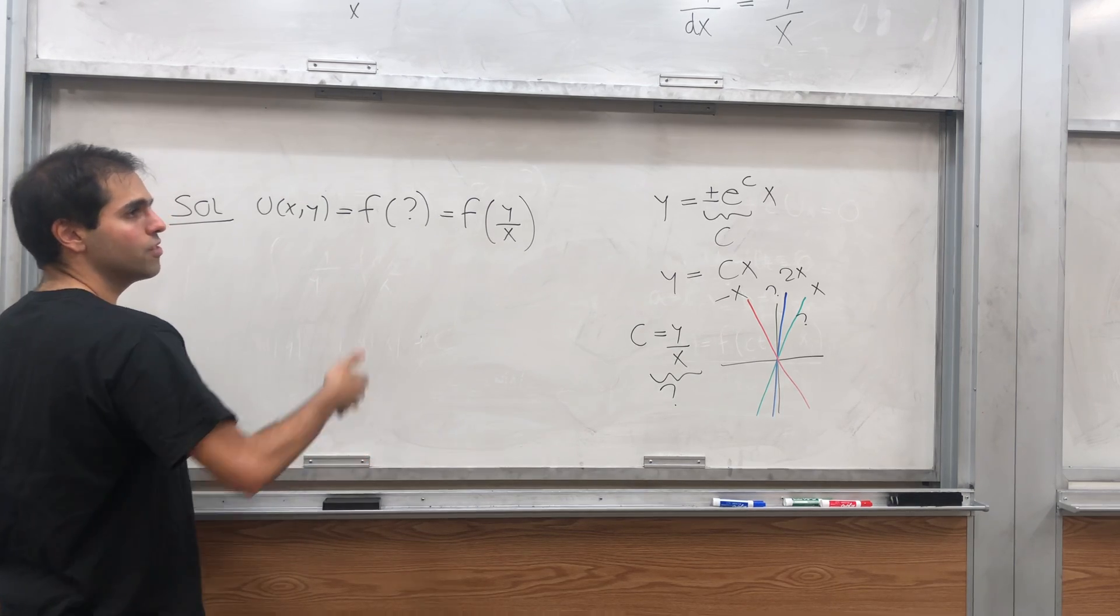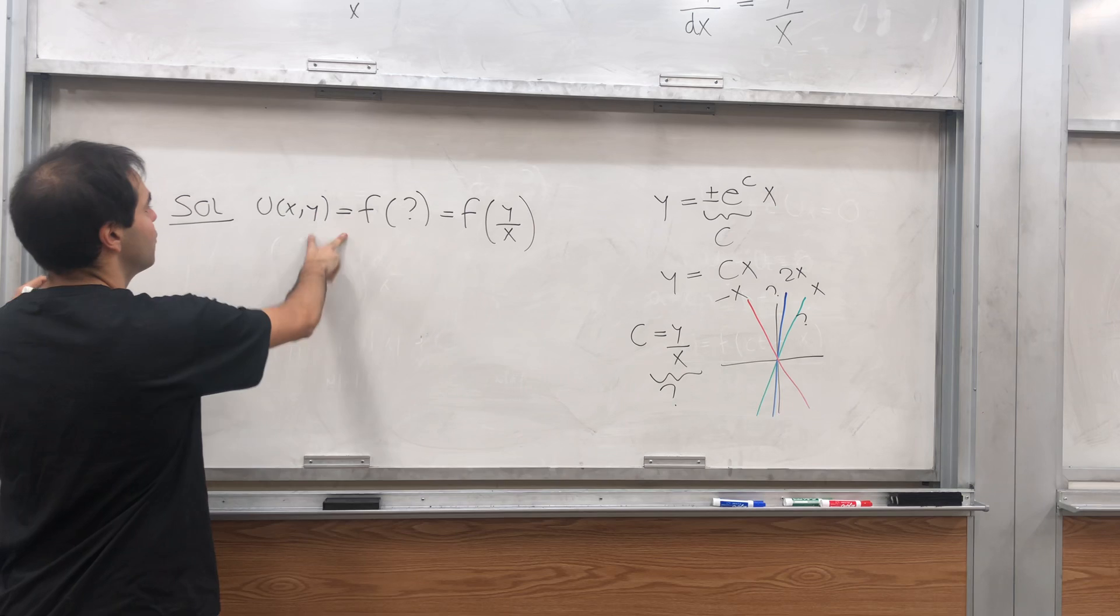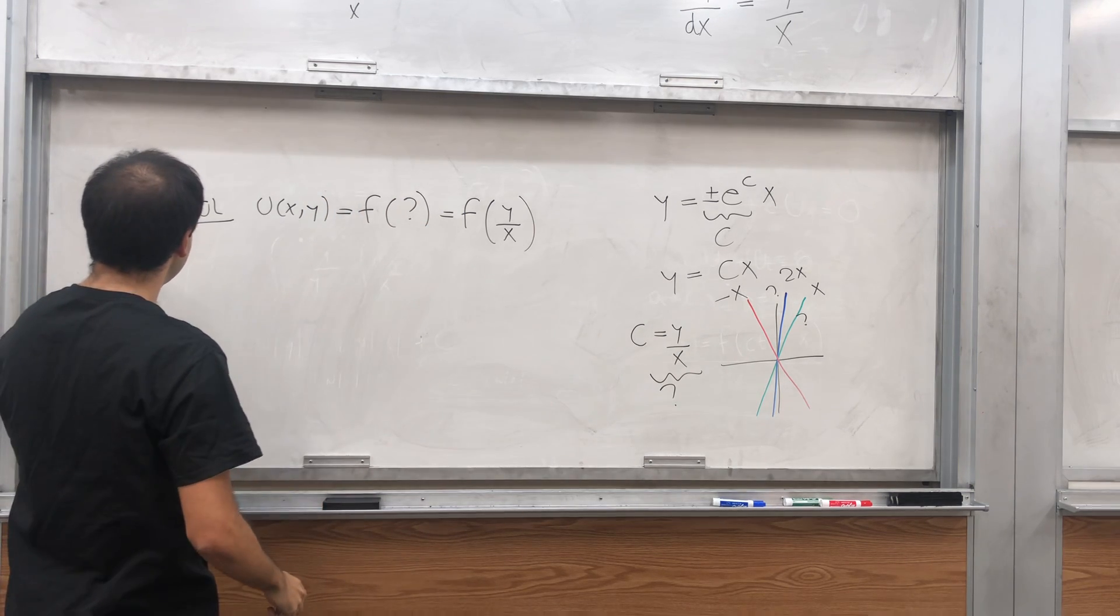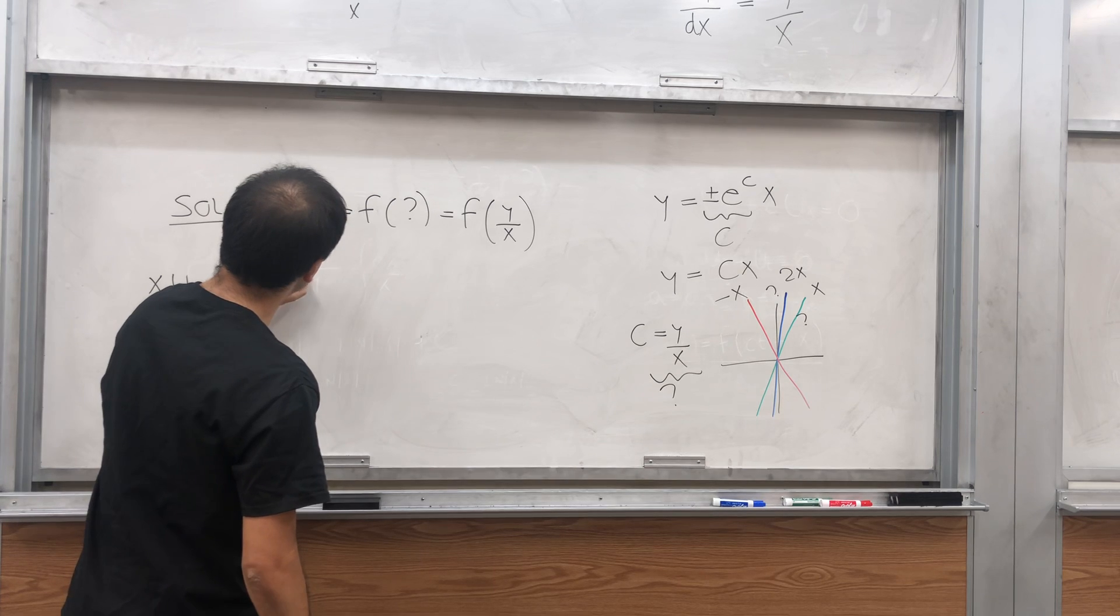So is u of this curve constant? Actually, let me do both things. So first of all, let me show you that, in fact, x u_x plus y u_y equals zero.